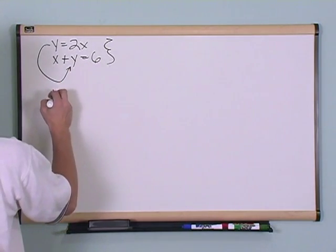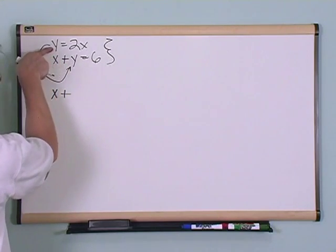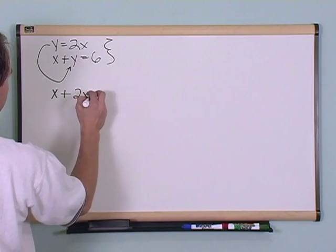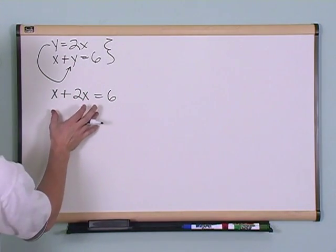Using this second equation, x plus y, but remember, y is just equal to 2x, so I'm going to put a 2x here, equals 6. This is very crucial for you to understand what we're doing here.